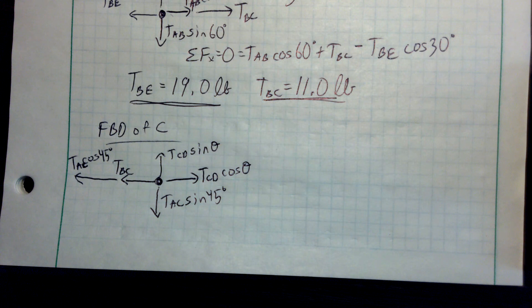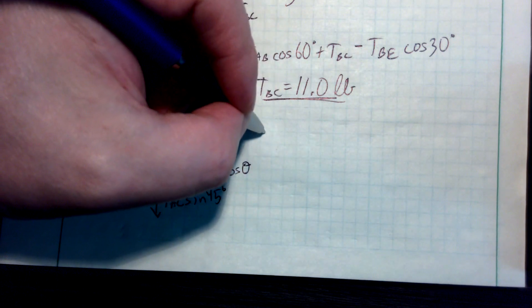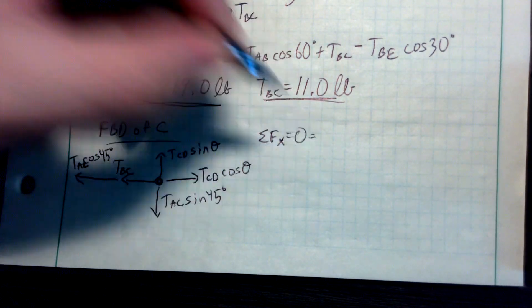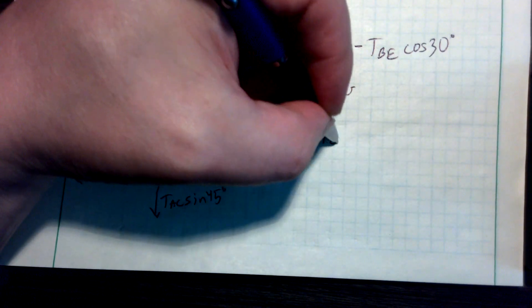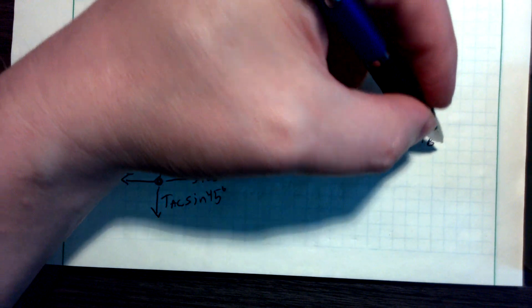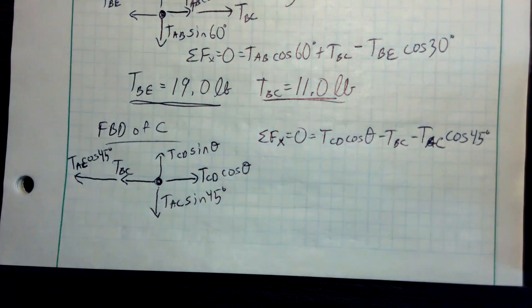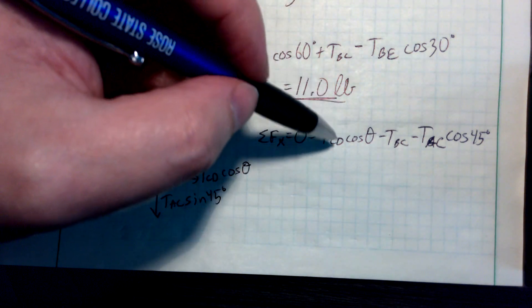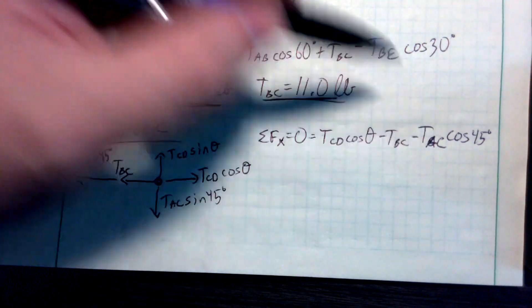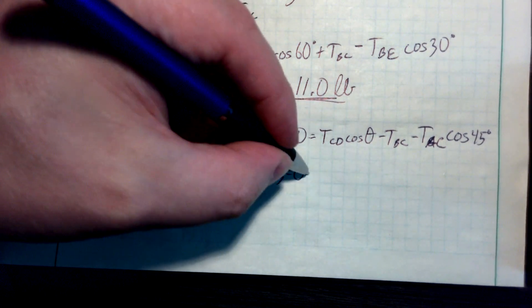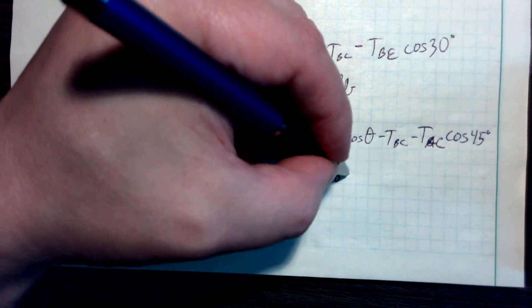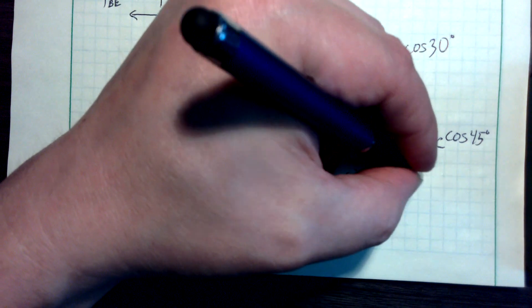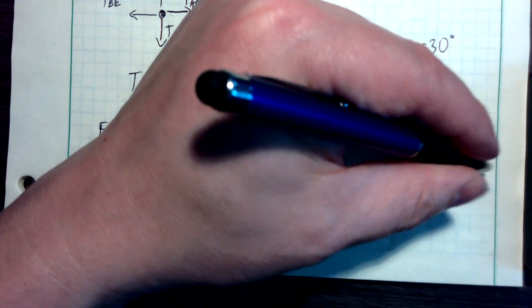I'm going to work it using tension and angle as unknowns, and show some of the algebra since finding an unknown angle can get tricky. Sum of forces in X equals zero: TCD cosine theta minus TBC minus TAC cosine 45 degrees equals zero. Sum of forces in Y equals zero: TCD sine theta minus TAC sine 45 equals zero. TBC and TAC are both known values found previously.